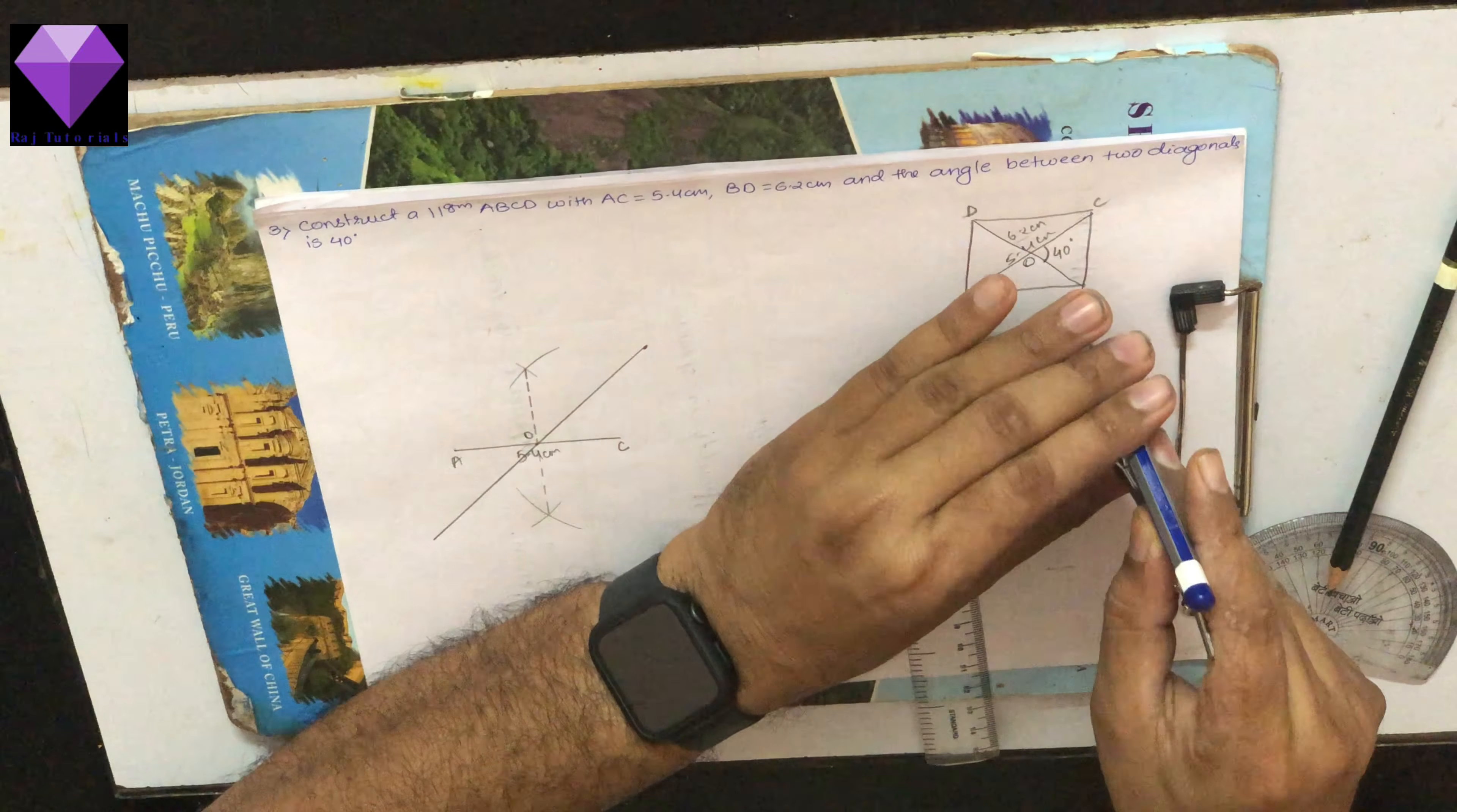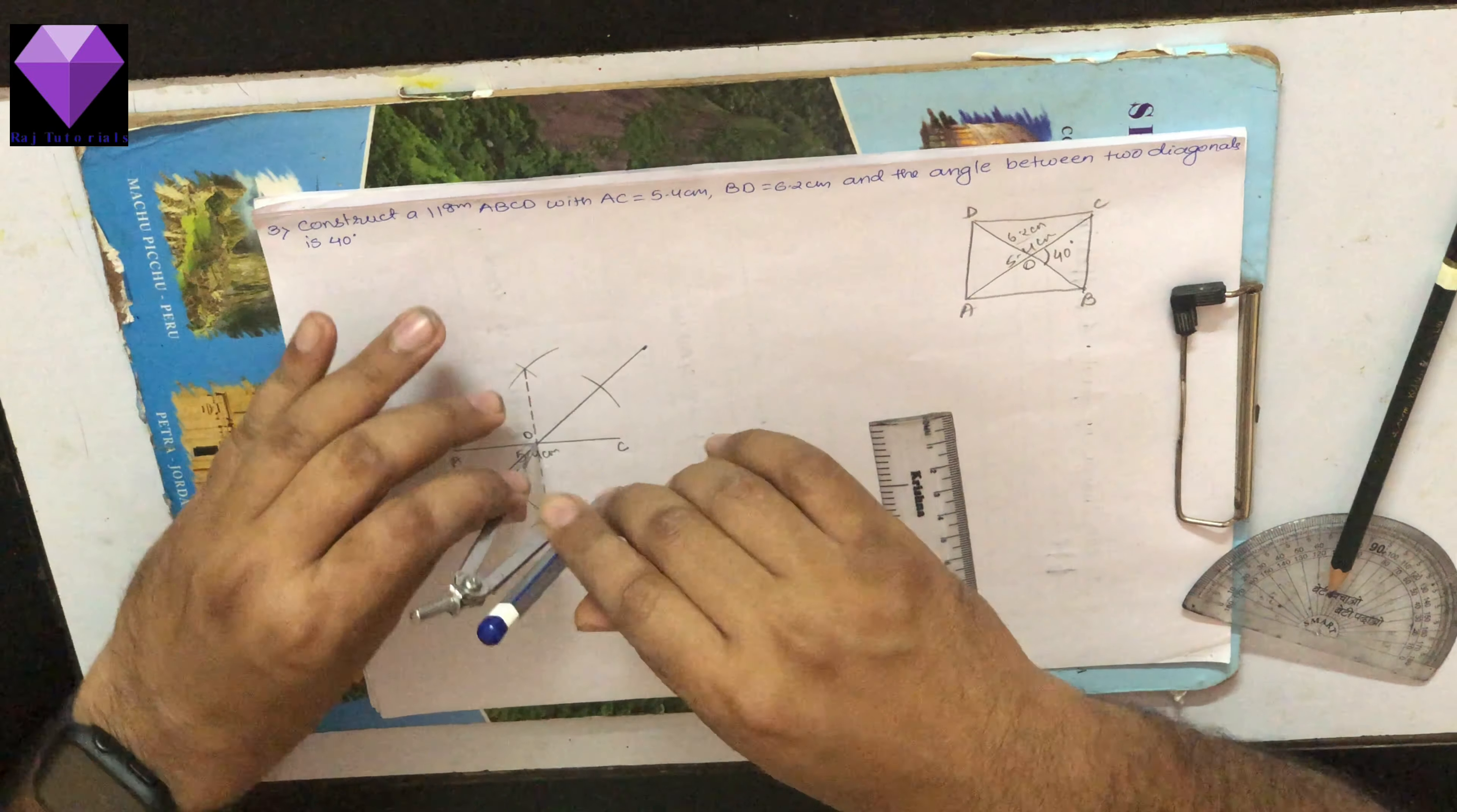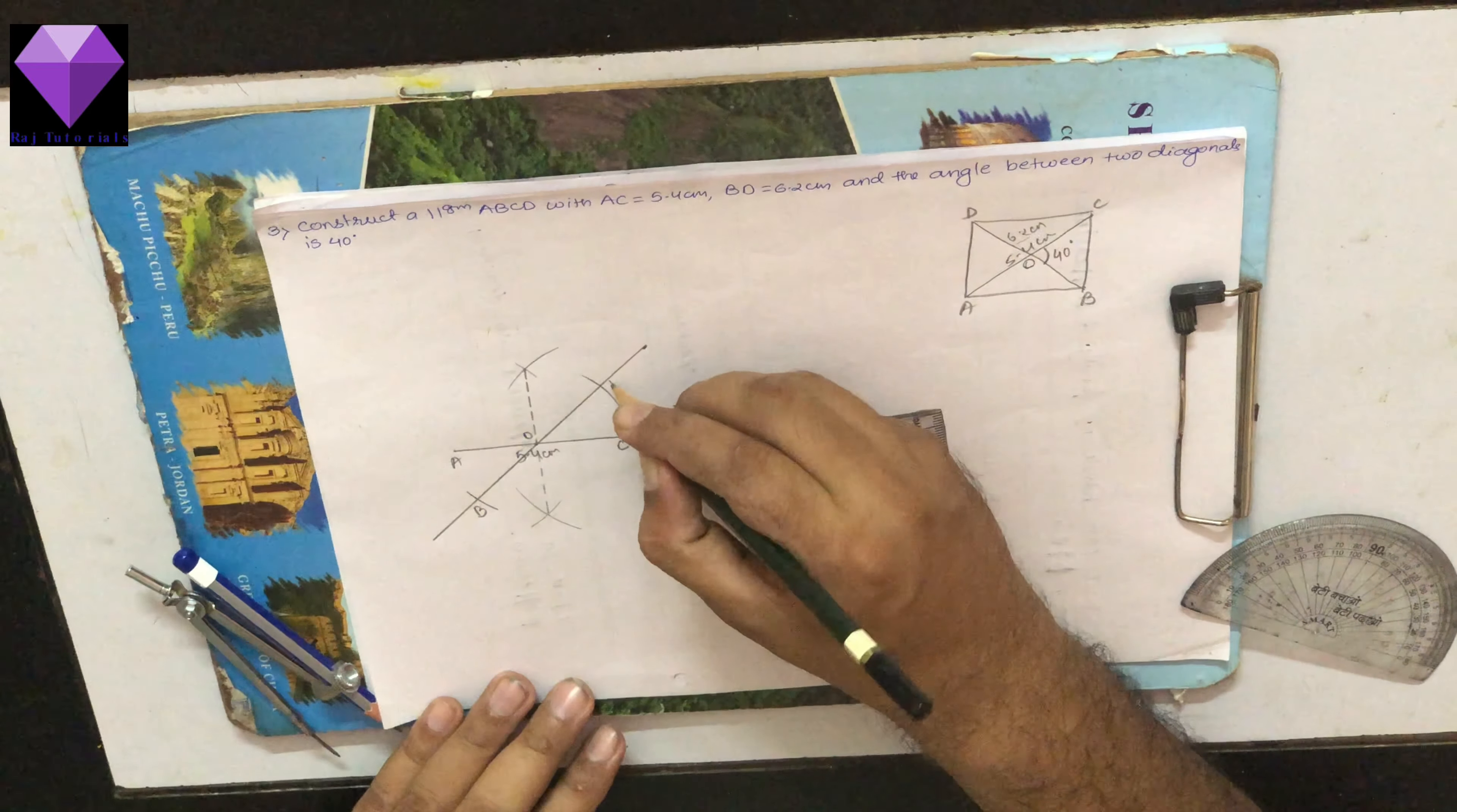So I am measuring 3.1 cm in my compass and one arc on the upper side, one arc on the lower side. So the points which I have got are B and D.